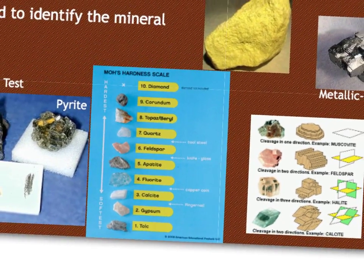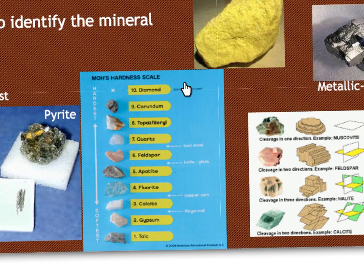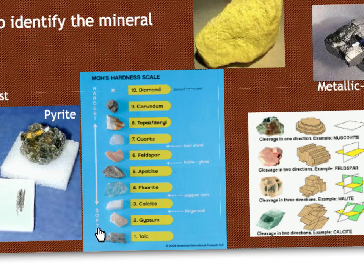Mohs hardness scale — remember, diamond is at the top with a 10, which means it can scratch everything else. A 10 is the hardest and a 1 is the softest, meaning it can be scratched by everything else. Talc can be scratched by all the other minerals on the Mohs hardness scale. In the lab, we tested fingernail, copper coin, glass, and a steel tool, because all of those have a certain hardness. This helps us figure out which mineral it is if we know that a fingernail or a copper coin can scratch it.